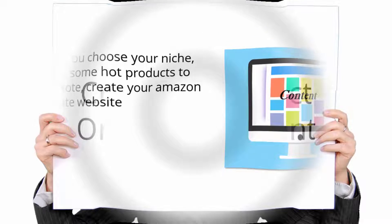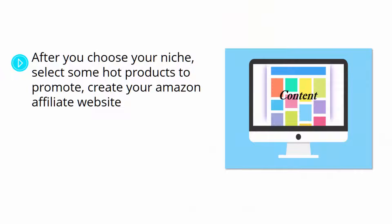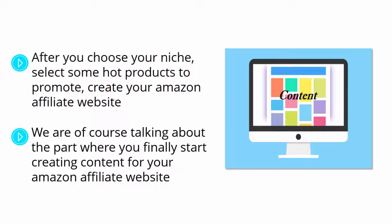Creating Product-Oriented Content. After you choose your niche, select some hot products to promote, create your Amazon affiliate website, and sign up for the Amazon Associates program to create your account, the time comes to start doing the hardest part — the one that will determine if you make it or break it as an Amazon affiliate. We are, of course, talking about the part where you finally start creating content for your Amazon affiliate website, because content is what will attract buyers to your sites.